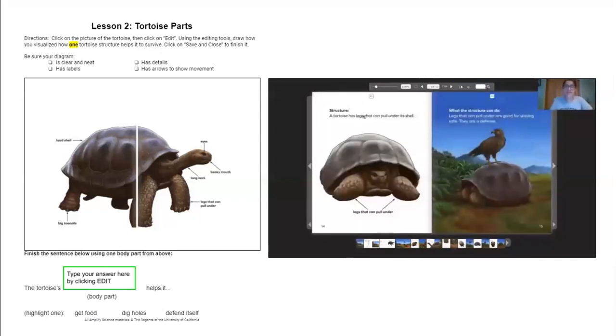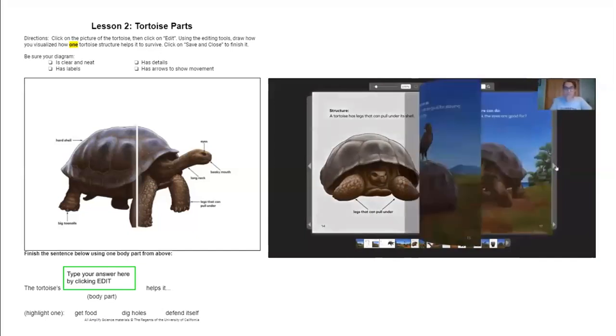Structure: A tortoise has legs that can pull under its shell. What the structure can do: Legs that can pull under are good for staying safe. They are a defense. There's the word again. Defense.